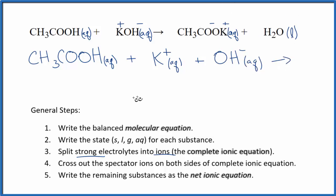The products, we end up with this CH3COO minus. This is the acetate ion, that's aqueous. Plus the potassium ion. And that water, we said we don't split liquids apart in net ionic equations. So this is what we call the complete ionic equation.